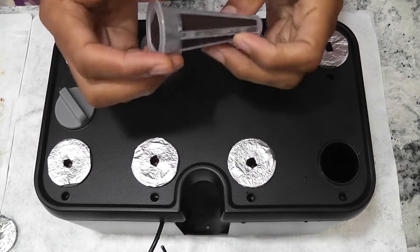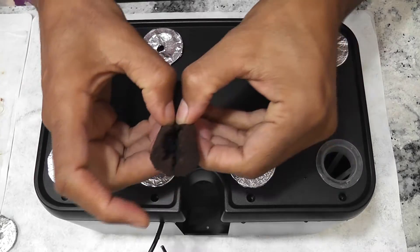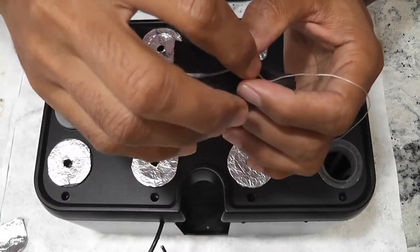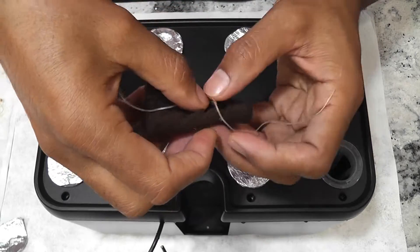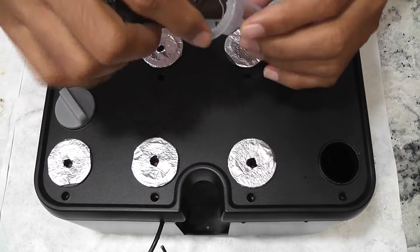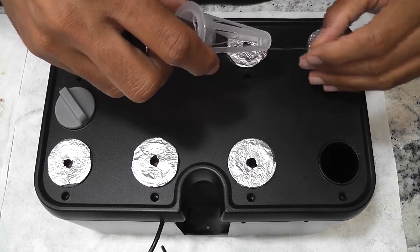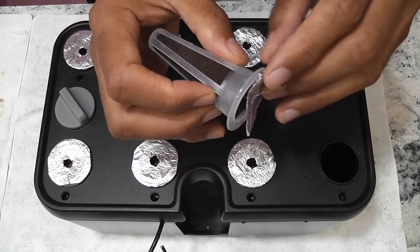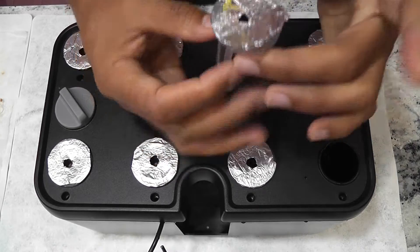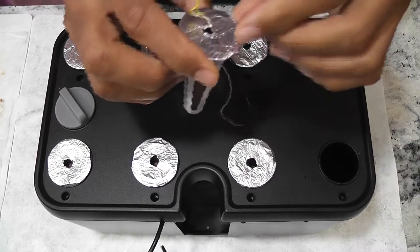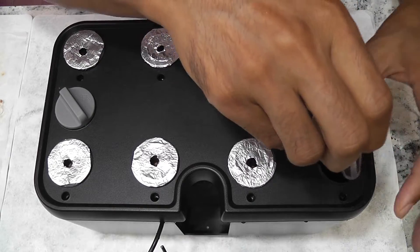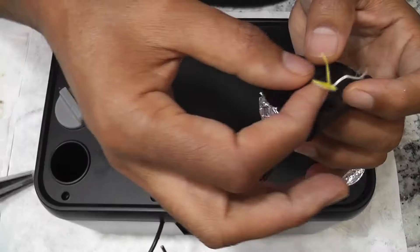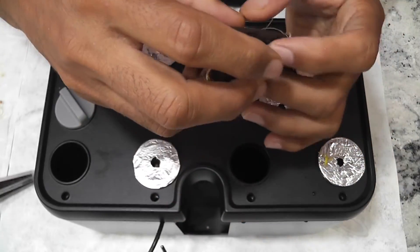It is very easy process. Just slit and open the sponge. Then place the seedling deep into the sponge. Place it into the pod and cover the pod with stickers. Since I don't have stickers, I am reusing the same foil that I used when I started the seeds directly. Now I am repeating the same process for rest of the pods. It takes some time but easy to do.